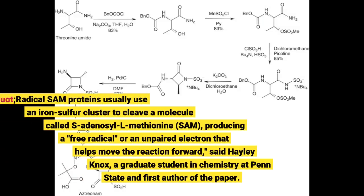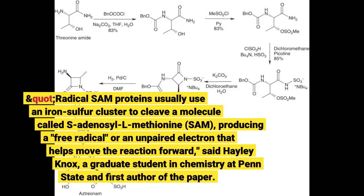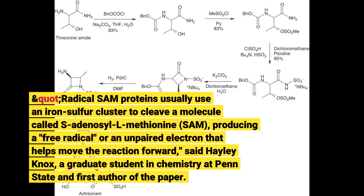Radical SAM proteins usually use an iron-sulfur cluster to cleave a molecule called S-adenosyl-L-methionine, producing a free radical — an unpaired electron that helps move the reaction forward, said Haley Knox, a graduate student in chemistry at Penn State and first author of the paper.